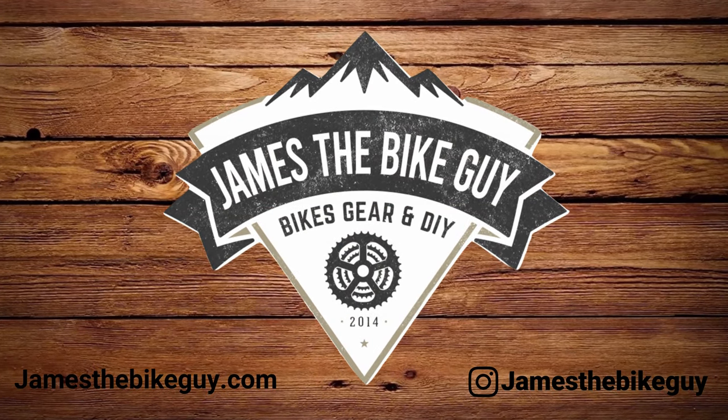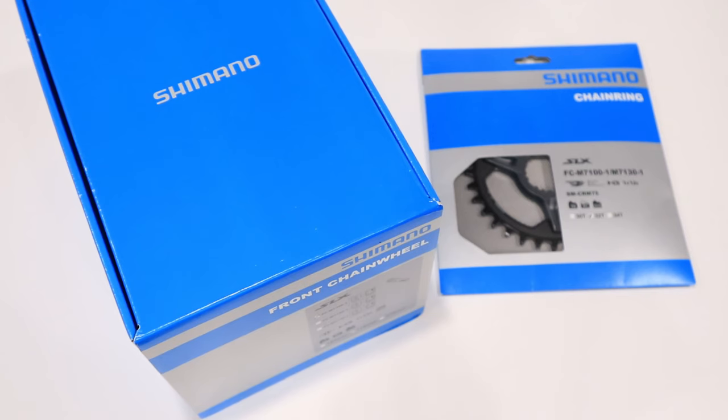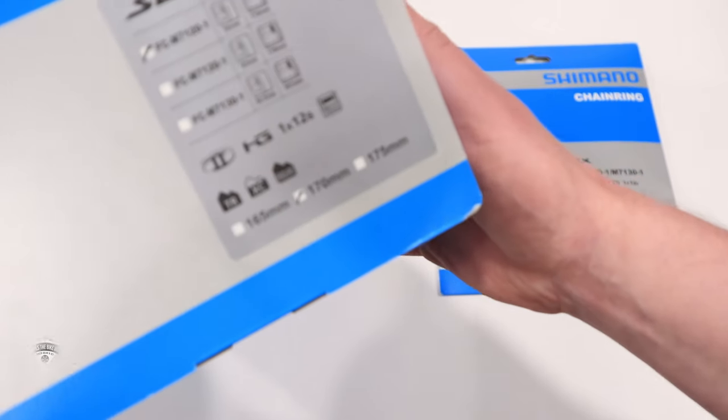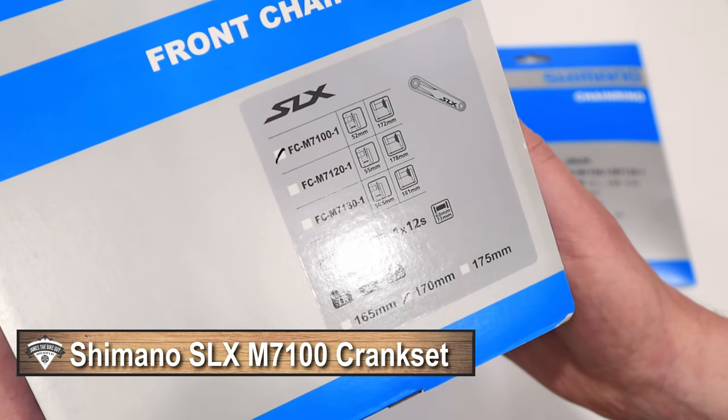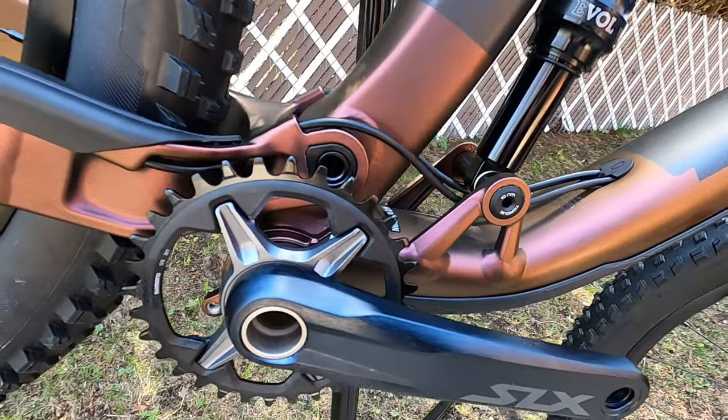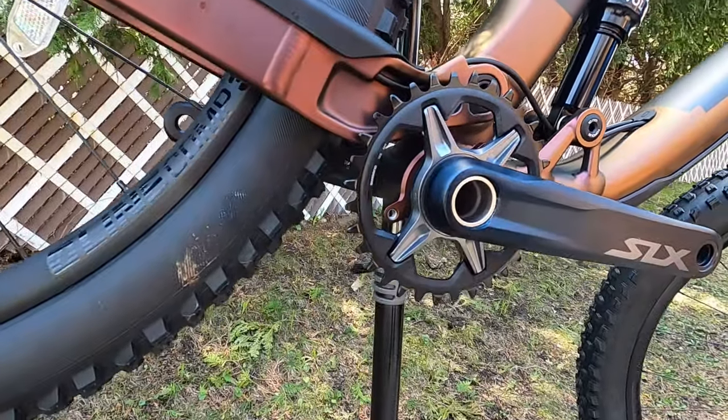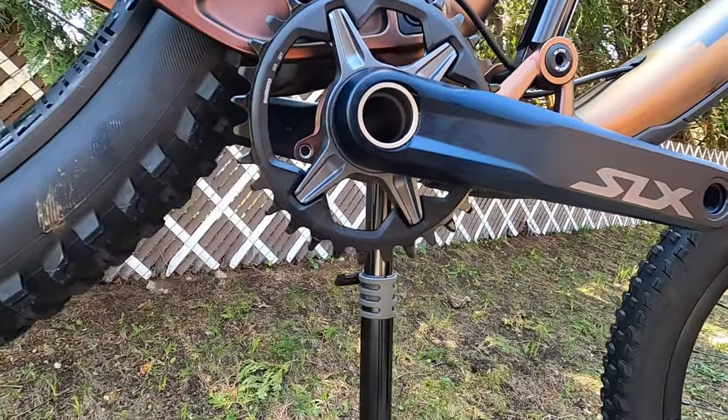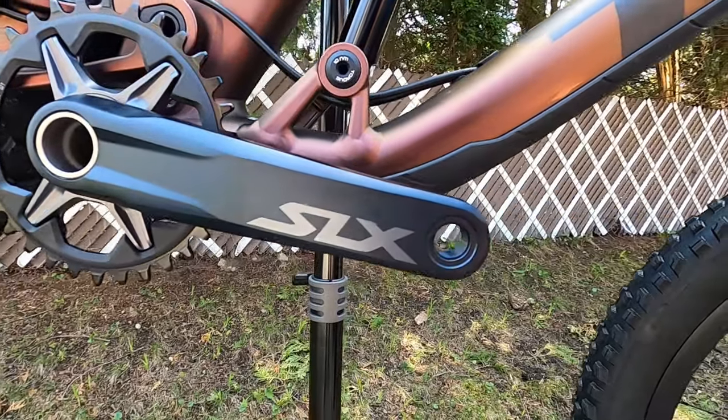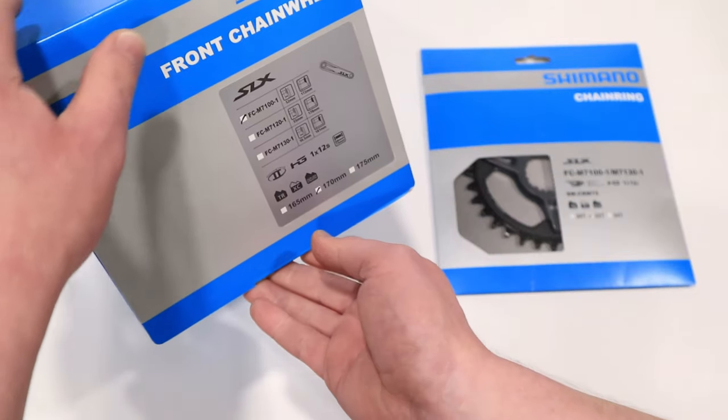On this James the Bike Guy, we're taking a look at the brand new Shimano SLX FC M7100-1. This is a 1x specific crankset from Shimano, and it's in the new 12-speed SLX 7100 groupset.